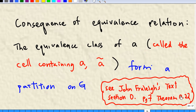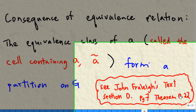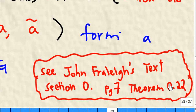What is the consequence of an equivalence relation? The equivalence class of A, called the cell containing A, forms a partition on G. You can see this in John Fraleigh's text, section 0, page 7, theorem 0.22.